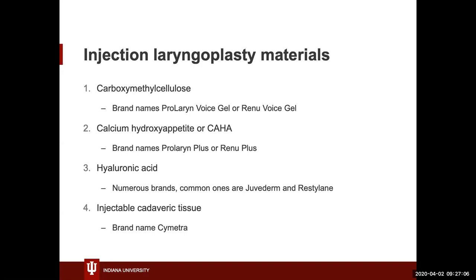Various materials are used for injection, including morselized gel foam, fat, and injectable cadaveric tissue called Cymetra. But the only two FDA-approved materials are carboxymethylcellulose — ProLaryn Voice Gel or Renew Voice Gel — and calcium hydroxyapatite — ProLaryn Plus or Renew Plus.